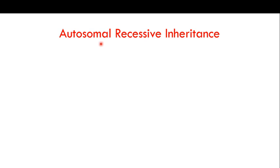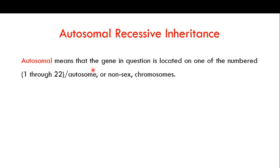The first thing you need to understand is what is autosomal recessive inheritance. The term 'autosomal' means that the gene in question, which is responsible for a particular genetic disorder, is located on one of the numbered chromosomes — chromosome number 1 through 22 — or simply on a non-sex chromosome, not on the X or Y chromosome.